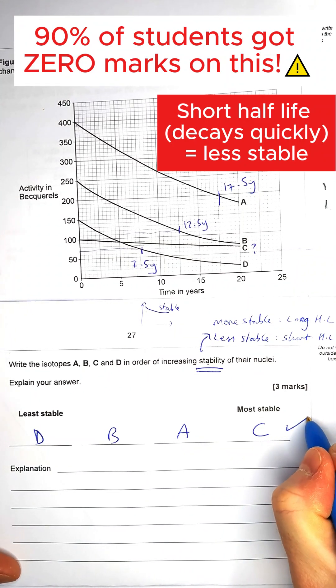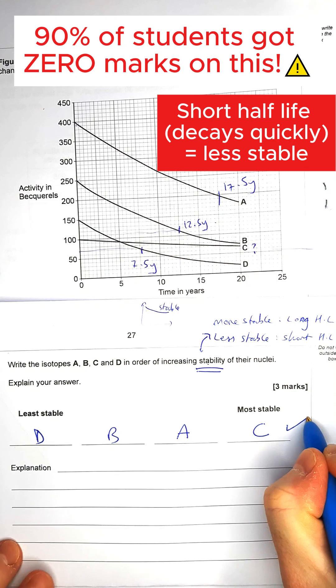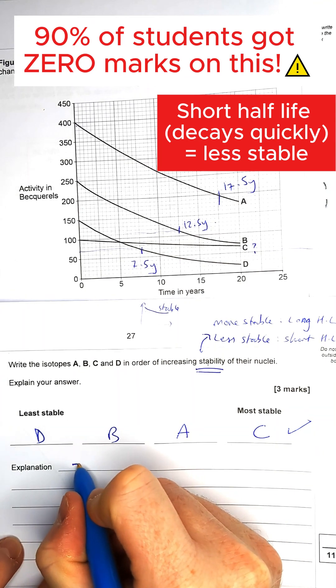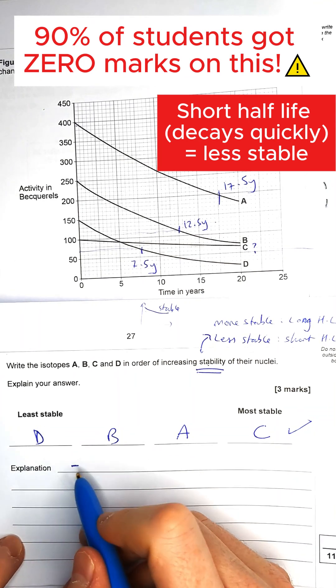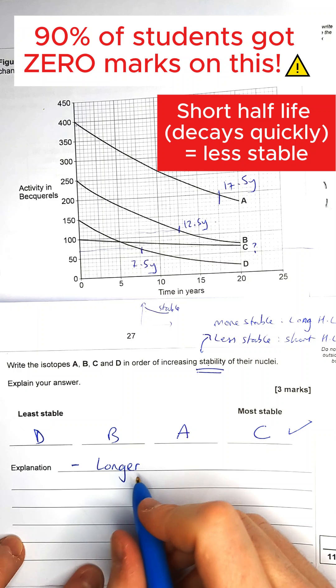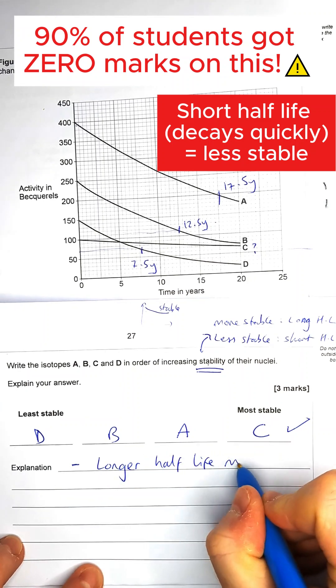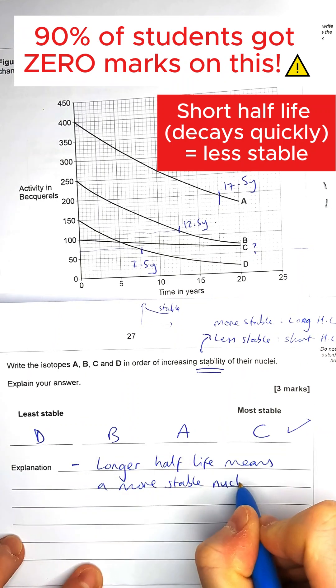So it's actually one mark for getting that order correct, which only less than 10% of people did in this question, and then we get a mark for talking about our explanation. So the explanation would be that the longer half-life means a more stable nucleus.